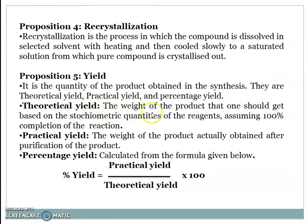Theoretical yield: The weight of the product that one should get based upon stoichiometric quantity of the reagent, assuming 100% completion of the reaction. Practical yield: The weight of the product actually obtained after the purification of the product. Percentage yield is calculated from the formula: percent yield equals practical yield divided by theoretical yield times 100.